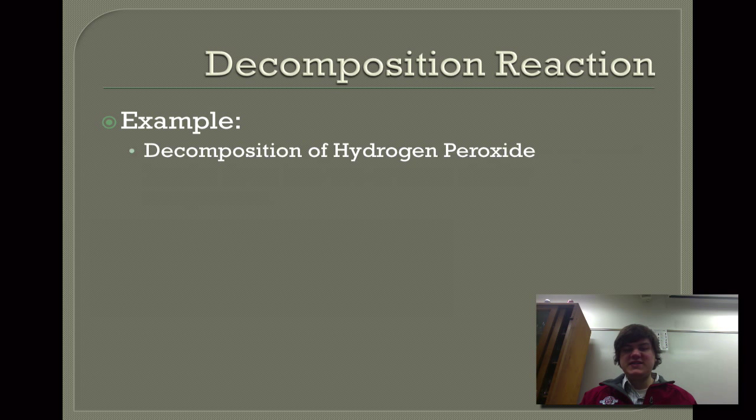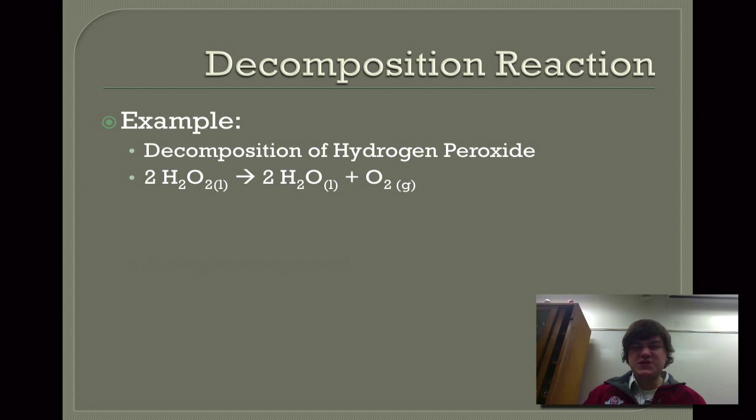An example is the decomposition of hydrogen peroxide. The formula for hydrogen peroxide is H2O2, and this decomposes into water and oxygen. Decomposition reactions are some of the hardest to predict the products. Many people would see H2O2 and expect that it decomposes into hydrogen gas and oxygen gas. And while there's a way to make this happen, that is not the typical decomposition reaction that it undergoes. So these can be a little bit tricky.